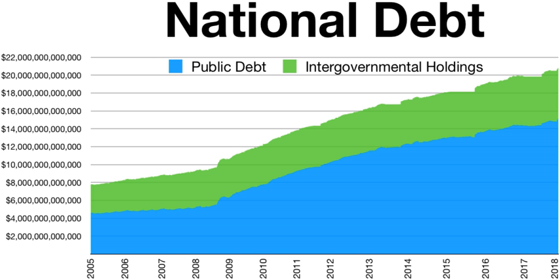The national debt of the United States is the debt, or unpaid borrowed funds, carried by the federal government, measured as the face value of the currently outstanding treasury securities issued by the Treasury and other federal government agencies. The terms national deficit and national surplus usually refer to the federal government budget balance from year to year, not the cumulative amount of debt. A deficit year increases the debt, while a surplus year decreases the debt as more money is received than spent.